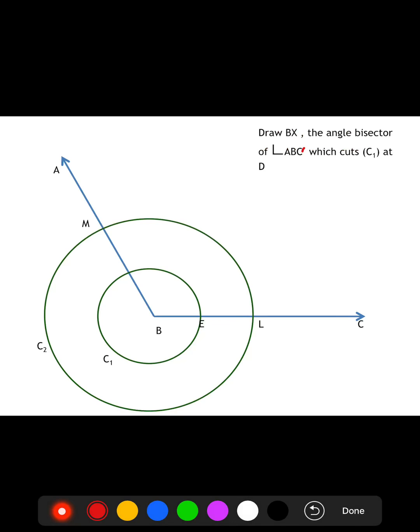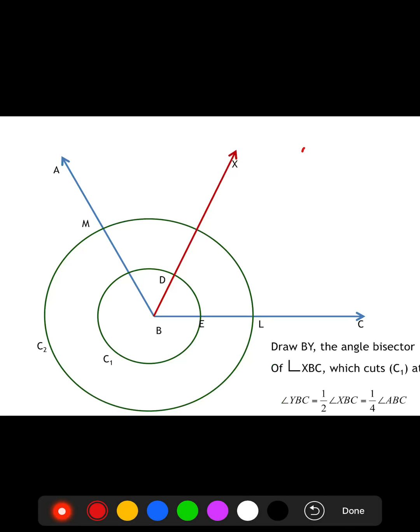Now draw BX the angle bisector of angle ABC, which cuts C1 at a point D. Now again draw the angle bisector BY of angle XBC, which cuts C1 at a point F. So that angle YBC is half of angle XBC, which is one fourth of angle ABC.